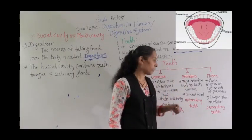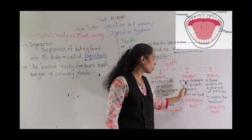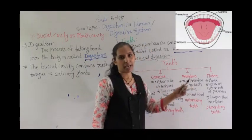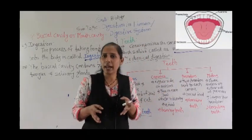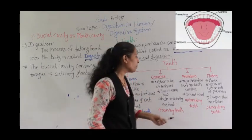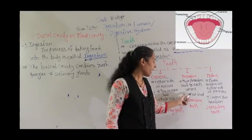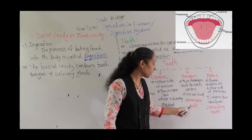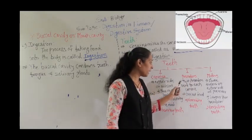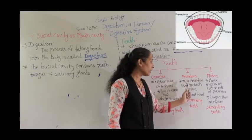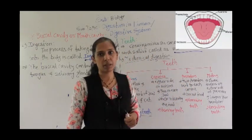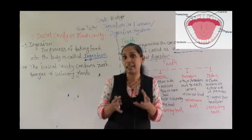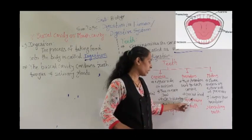Next we will discuss premolars. There are two premolars next to each canine. Premolars are flat and broad teeth which help to grind the food — that is why they are called grinding teeth. They have a broad grinding surface which helps to grind the food.